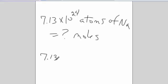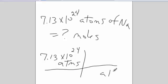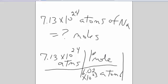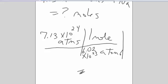It's 7.13 times 10 to the 24th atoms. Well, I know that there is 6.02 times 10 to the 23rd atoms in one mole. Oh look, I'm trying to find moles, so I'm done. I can stop there. I'll get out my calculator. 7.13 second comma 24 divided by 6.02 second comma 23 equals 11.8 moles. A simple one-step dimensional analysis problem.